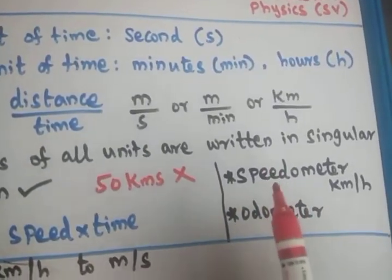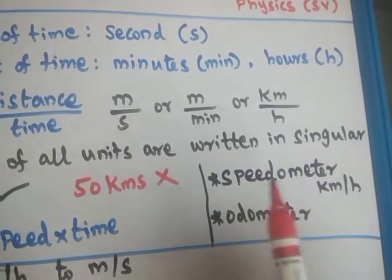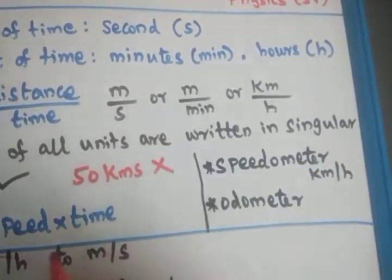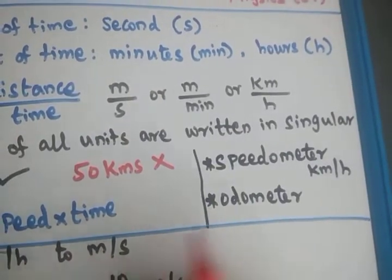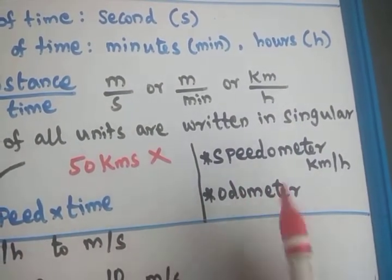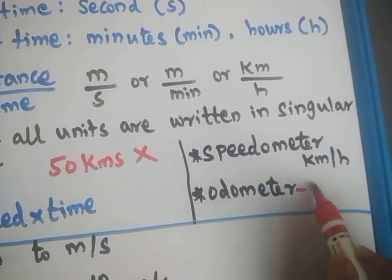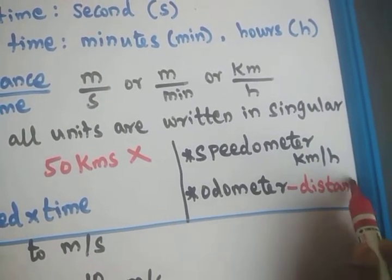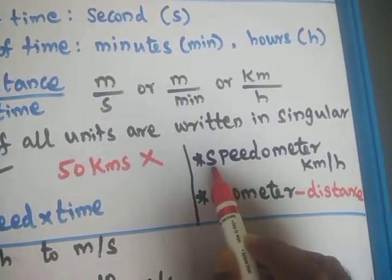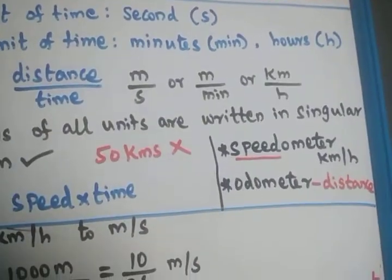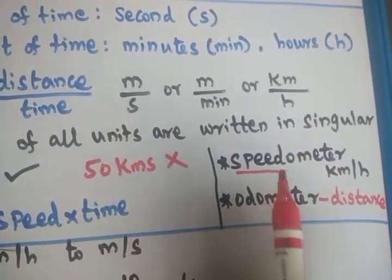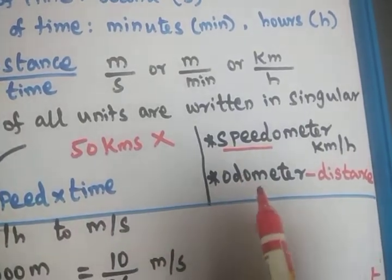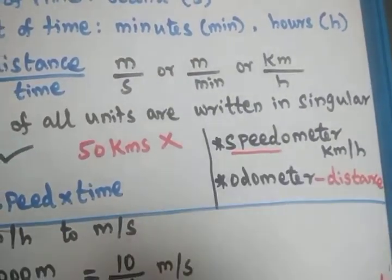Speed can be measured by a special device called a speedometer, which is attached in our cars, bikes, and everything. Inside the speedometer there is an odometer which measures the distance. So the odometer measures the distance covered by the vehicle, and the speedometer measures the speed of the vehicle.